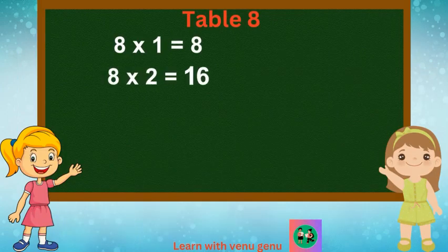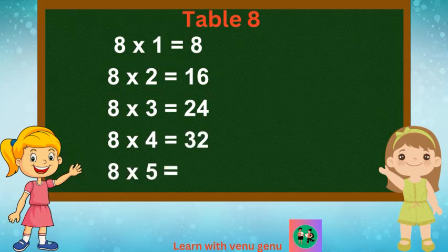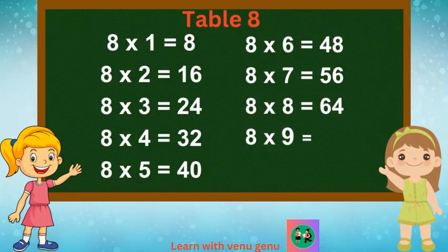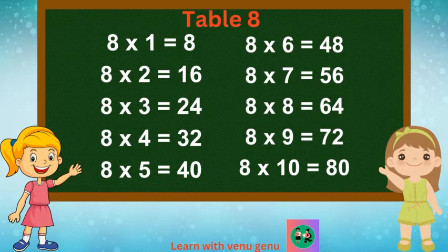Once again: 8 1s are 8, 8 2s are 16, 8 3s are 24, 8 4s are 32. 8 5s are 40, 8 6s are 48, 8 7s are 56. 8 8s are 64, 8 9s are 72, 8 10s are 80.